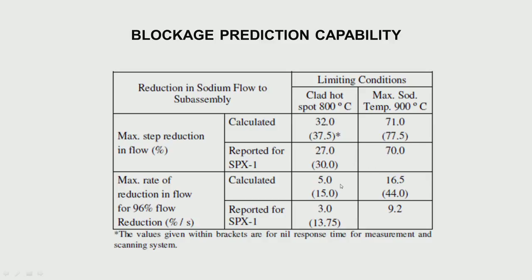For the slow flow reduction case of 96% flow, the rate our model could accept to reach 800°C was 5% per second, whereas they reported about 3% per second. For the other case, we got 16.5 as the end point. There are some differences because we don't know the exact data — literature doesn't give complete data. Nevertheless, the trends are good and we are not very far from what is happening. This gave us confidence that we are able to predict the core conditions well.